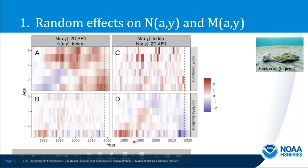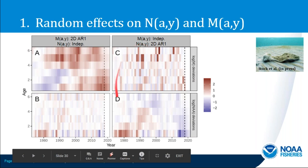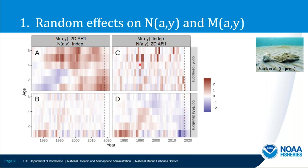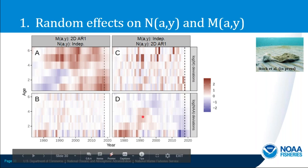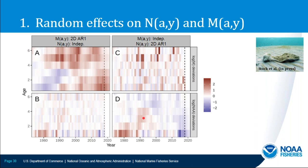It depends. If the only random effect is the survival transitions, a positive deviation could reflect misspecified natural mortality, fishing mortality, or selectivity — there's some confounding. It could also be emigration or immigration. If you're independently also estimating deviations in M, a positive deviation in numbers at age is more likely to reflect immigration than if you weren't also estimating deviations in M.